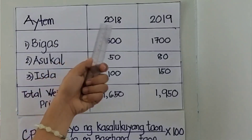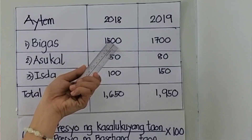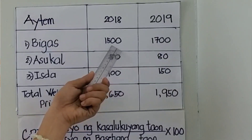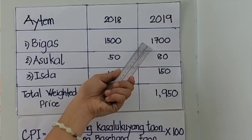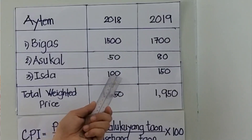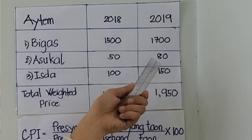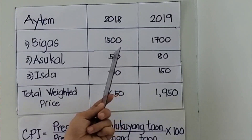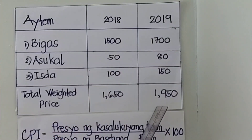Hypothetical po ito dahil iba-iba ang bawat presyo. Sa taong 2018, ang isang sakong bigas ay nagkakahalaga ng 1,500 pesos; pagdating ng 2019, ito ay nagiging 1,700. Sa asukal naman, mula 50 pesos per kilo, nagiging 80 pesos per kilo sa taong 2019. Sa isda naman, mula 100 per kilo, nagiging 150 sa taong 2019. Kaya ang total weighted price ng mga produktong ito sa 2018 ay 1,650, at sa 2019 naman ay 1,950.